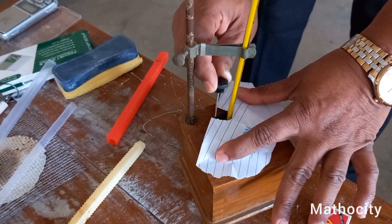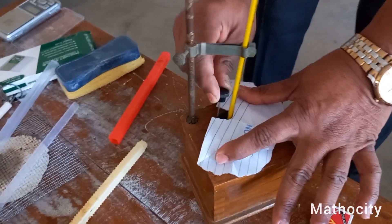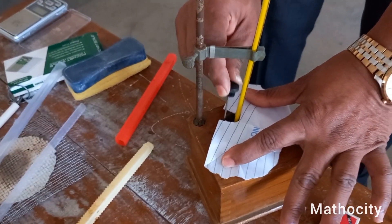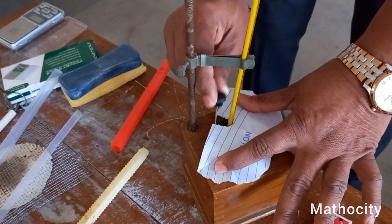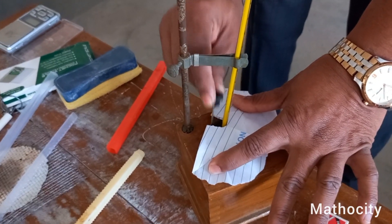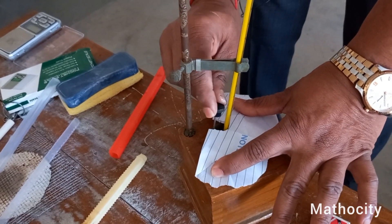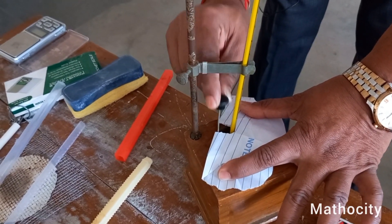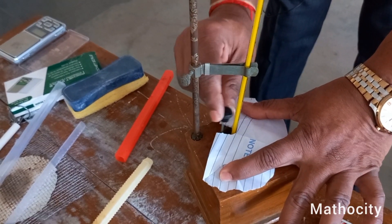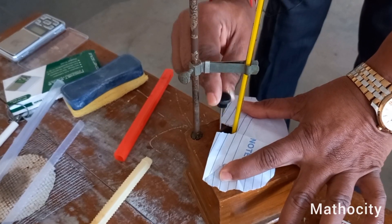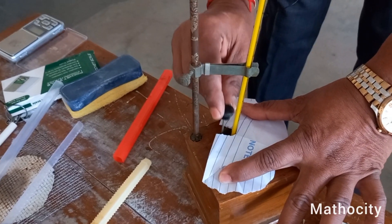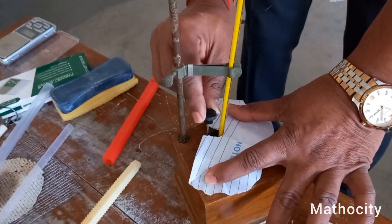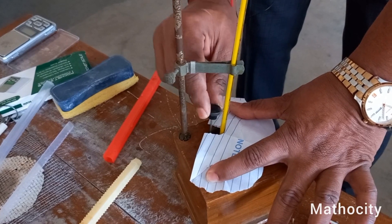I kept the calorimeter inside the wooden box to prevent any loss of heat. I am stirring the liquid. I have to stir it to equalize the temperature.